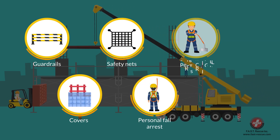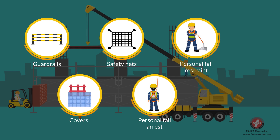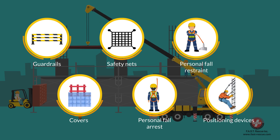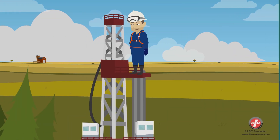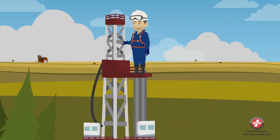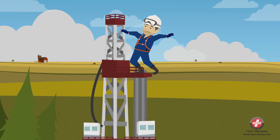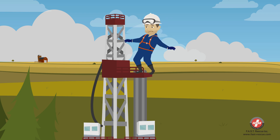Other systems include personal fall restraint and positioning devices. Regarding the anatomy of a fall, it takes most people about one-third of a second to become aware of a fall.